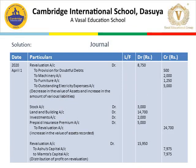The next entry is for the revaluation account. Revaluation account debit 8,750 to: provision for doubtful debts credited 500, machinery account credited 2,000, furniture account credited 1,250, outstanding electricity expenses credited 5,000. These represent decrease in value of assets and increase in amount of liabilities. The next entry records increases: stock account debit 3,000, land and building account debit 14,700, investment account debit 2,000, prepaid insurance premium account debit 5,000 — all to revaluation account credited 24,700.